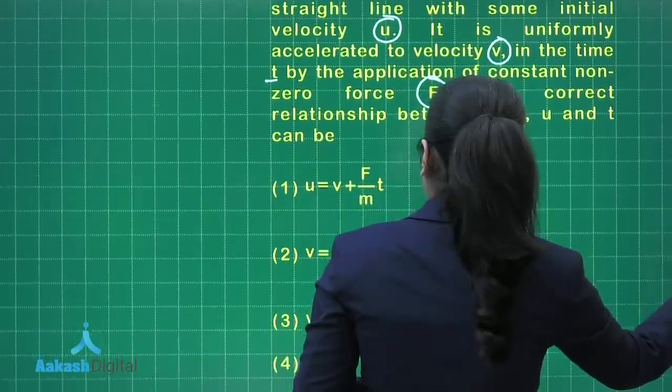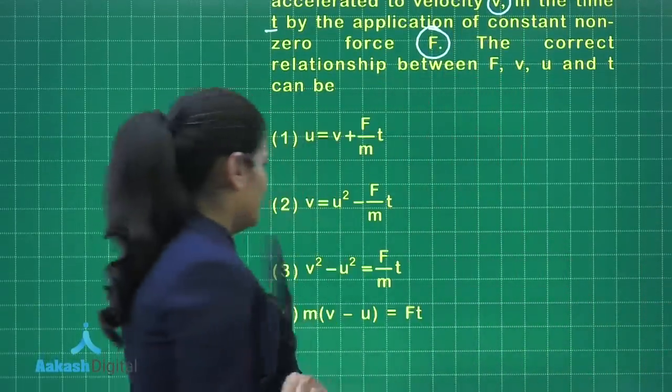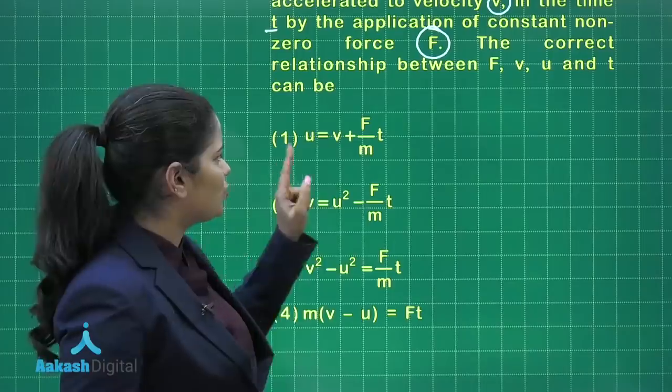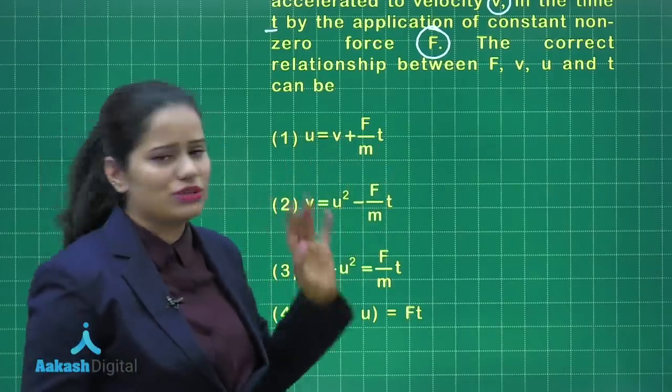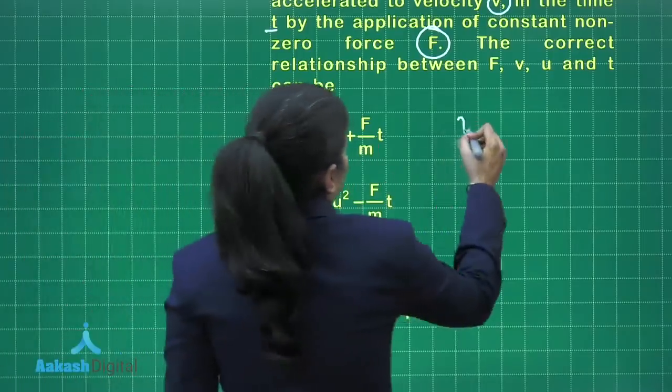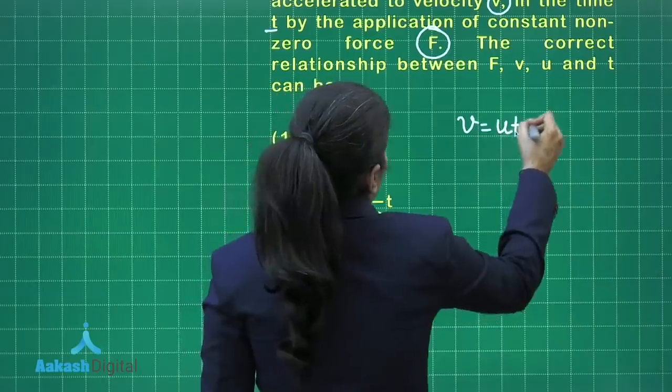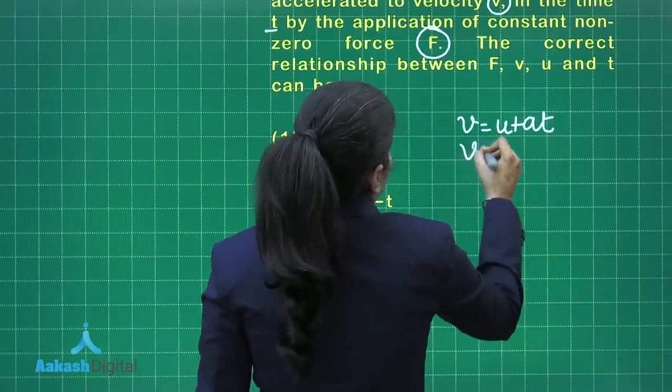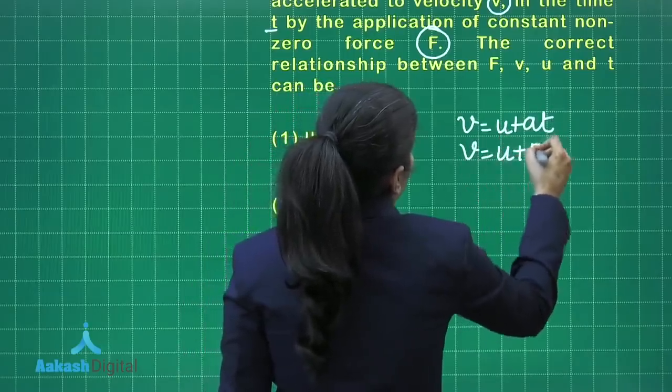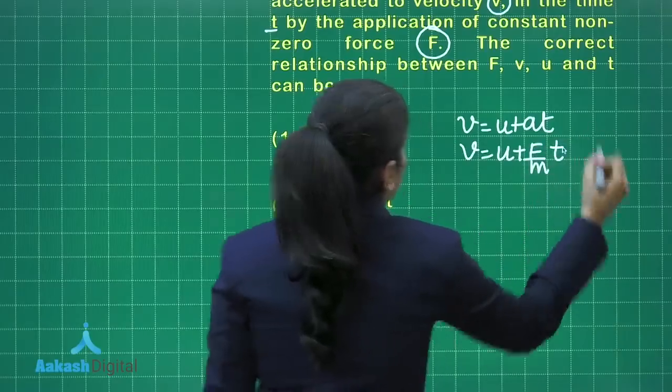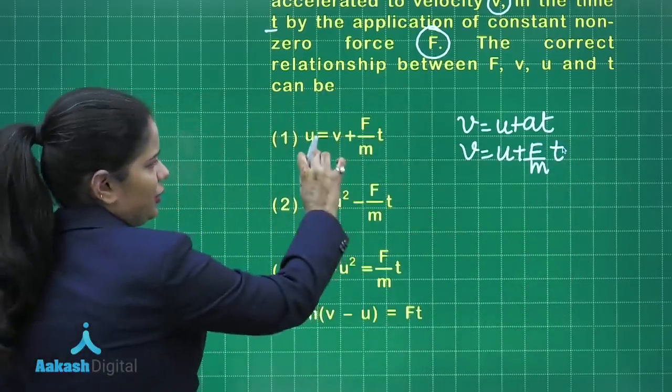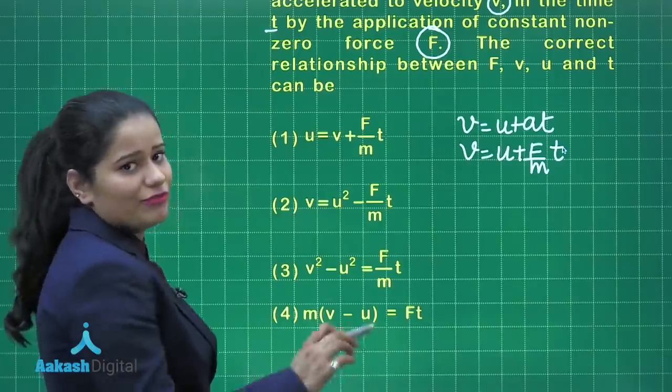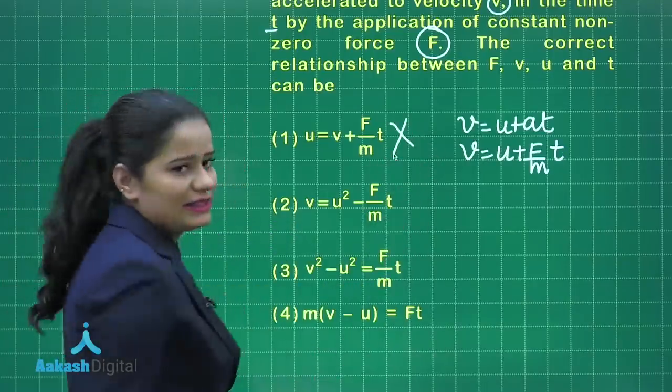Now, if you have a look at the options, option number 1 says U is equal to V plus F by M into t. We know the equation is V equals U plus At and A can be written as F by M, but here this is U equals V plus F by M into t, and hence this option is incorrect.